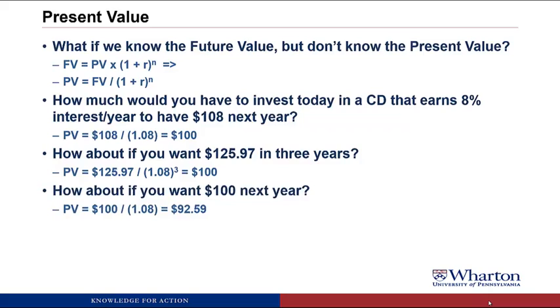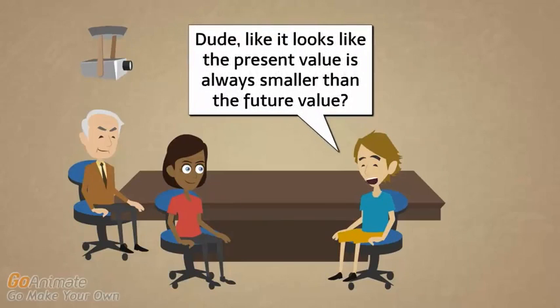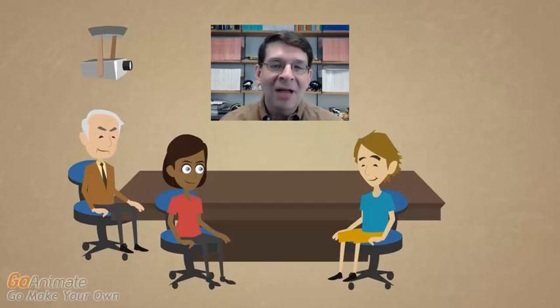A more common scenario is wanting a round number of cash in the future. What if we want $100 one year from now — how much would we have to invest today? The future value is $100, divided by 1.08, meaning we'd have to invest $92.59 today to have it grow to $100 a year from now. The present value of $1 next year is $0.93 at 8% interest. The present value is almost always smaller than the future value because the interest rate or discount rate is almost always positive. It would require a negative interest rate for present value to exceed future value.